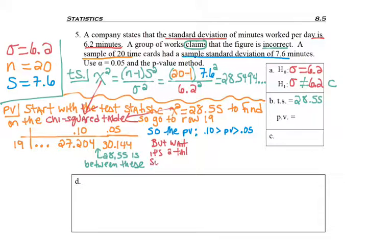But wait, it's a two-tailed test, so we need to double those values. Why do I say it's a two-tailed test? Yes, because the alternate hypothesis has not equal to. So it's a two-tailed test. So multiplying my existing p-value by 2, I'm really looking at 20 cents to 10 cents, 0.20 to 0.10. 20 cents is greater. And so for my p-value, 0.20 greater than the p-value, greater than 0.10.